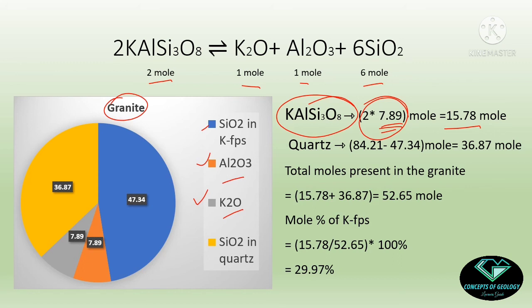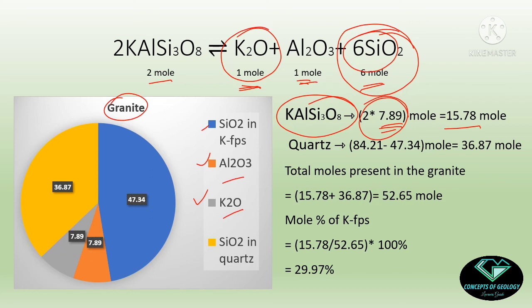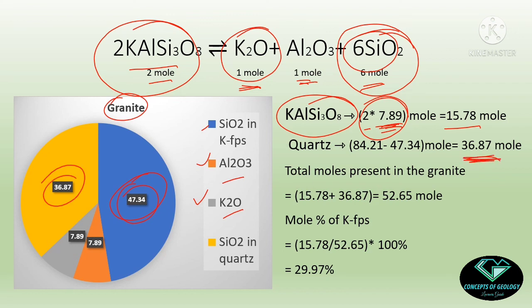After forming 15.78 moles of KAlSi3O8, the K2O and Al2O3 are consumed, so no more K-feldspar can be formed. The SiO2 needed for this reaction is 6 times the K2O and Al2O3, so 6 × 7.89 = 47.34 moles of SiO2 are consumed. The remaining SiO2 — that is 84.21 minus 47.34 = 36.87 moles — will form free quartz. So we have quartz at 36.87 moles and K-feldspar at 15.78 moles, giving a total of 52.65 moles in the granite.